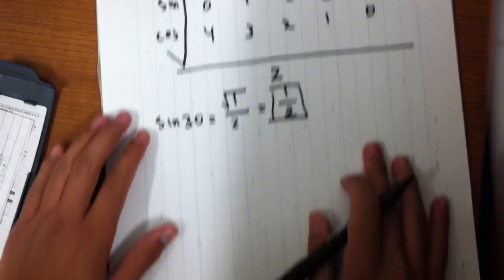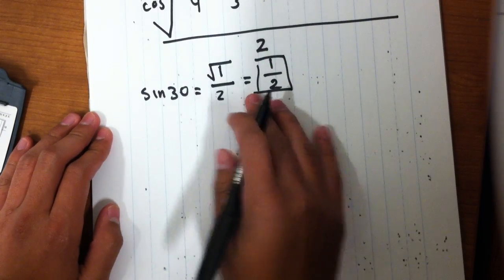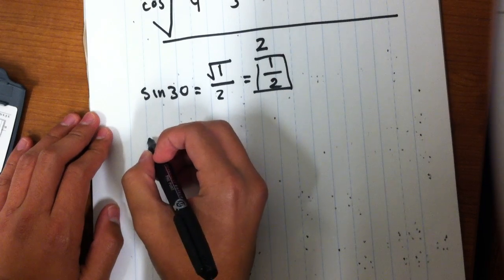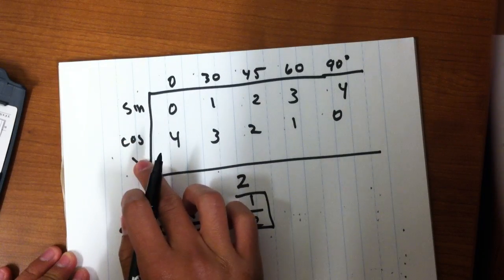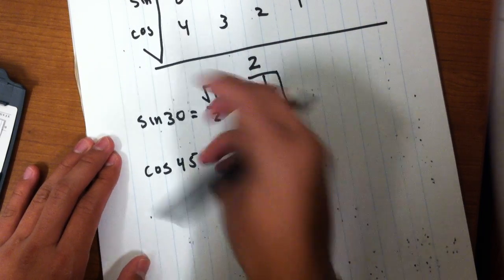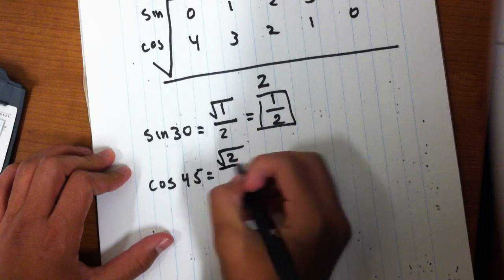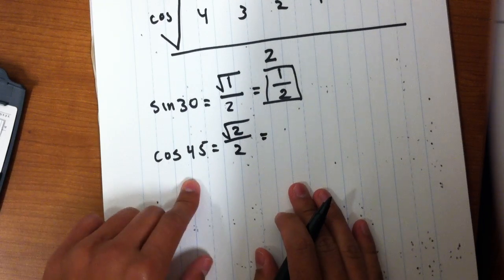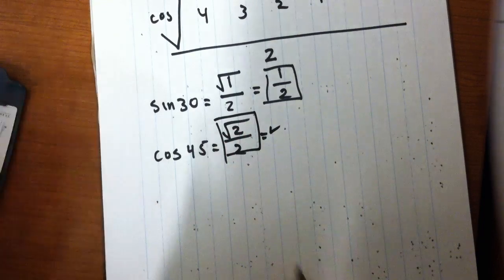So let's try an example with cosine now. Let's say cosine of 45. You go to cosine, you go to the 45, which is 2. So square root of 2 divided by 2. So cosine of 45 would be square root of 2 divided by 2. This would actually be the answer. And we could check in the calculator: cosine of 45 is going to equal square root of 2 over 2.